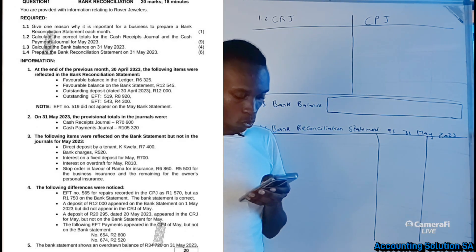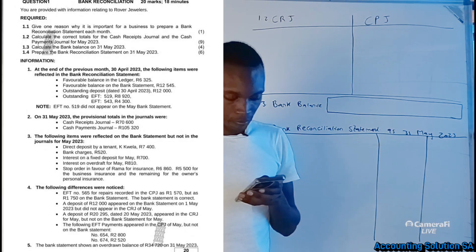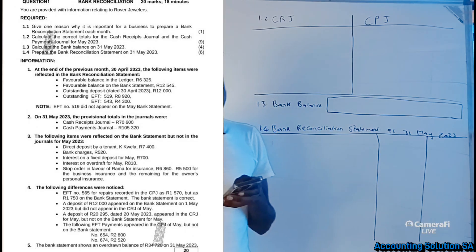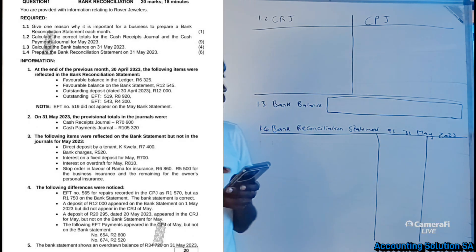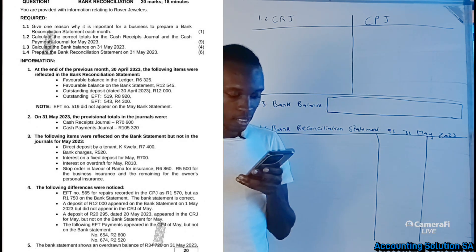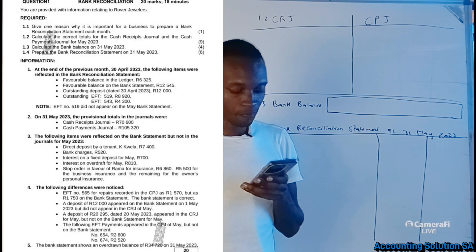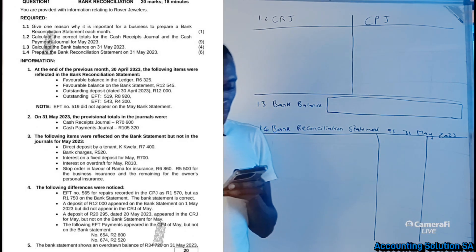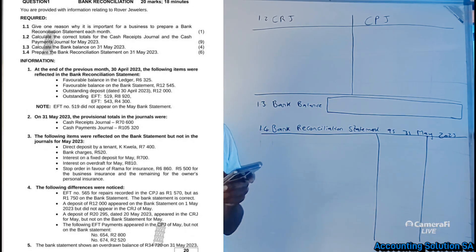Question 1.2: we have to calculate the correct total of the cash receipts journal and cash payment journal. Number 3: we calculate the bank balance. Number 4: we calculate the bank reconciliation statement. At the end of the previous month, 30 April 2023, the following items were reflected in the bank reconciliation statement. This is the previous statement because what we are preparing is for May.